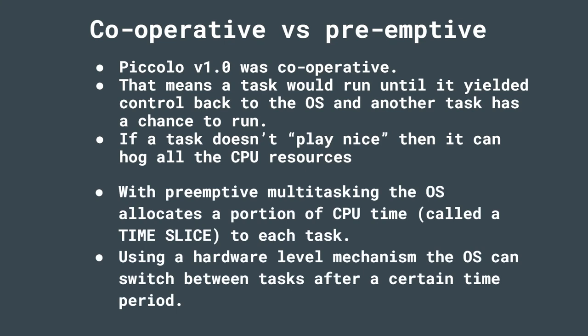With preemptive multitasking, the OS allocates a portion of CPU time called a time slice to each task, and using a hardware-level mechanism — this is the important thing — the OS can switch between tasks after a certain amount of time. It has to be hardware-supported because if a task is running doing its calculations and not yielding, the kernel doesn't get a chance to do anything. So we need a way that hardware says 'hold on, let's make things change here.'